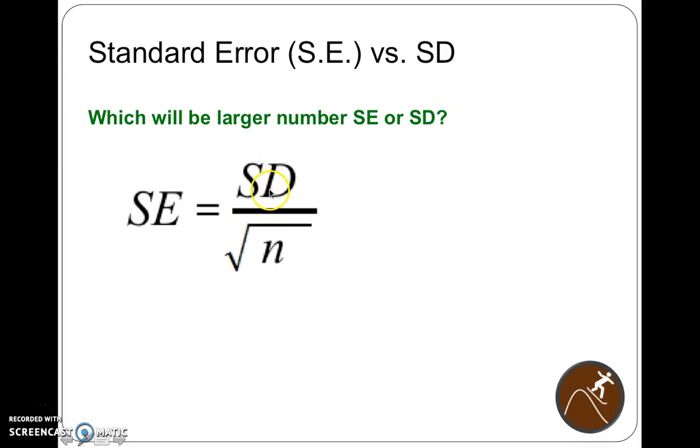So which will be larger? If you have the standard deviation over the square root of n, which is going to be larger, is the standard deviation going to be larger than the standard error? Well, this is always going to be a whole number. So my take is standard errors are always a lot smaller. You'll sometimes see scientists report standard errors instead of standard deviations in papers because it makes the actual numbers look better.